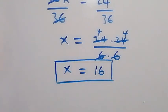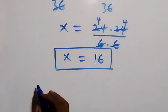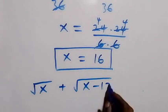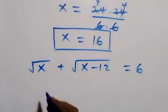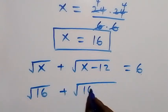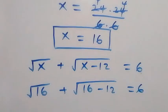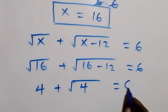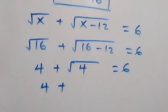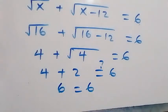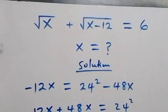Let's check if x equals 16 satisfies the original problem: root x plus root of (x minus 12) equals 6. Substituting: root 16 is 4, and root of (16 minus 12) is root 4, which is 2. So 4 plus 2 equals 6, and the left-hand side equals the right-hand side. Hence x equals 16 is confirmed.